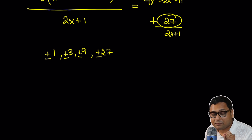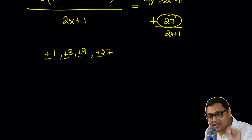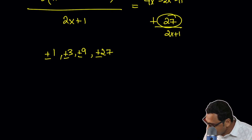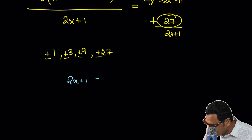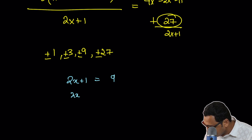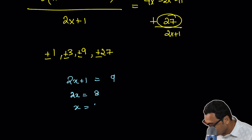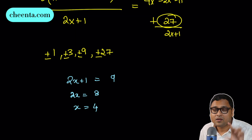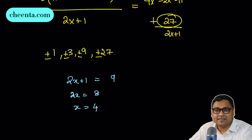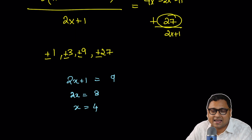You can set 2x + 1 equal to each of these divisors and solve for x. For example, if 2x + 1 = 9, then 2x = 8, so x = 4. I found one value. Why don't you find the remaining ones and put them in the comment section?